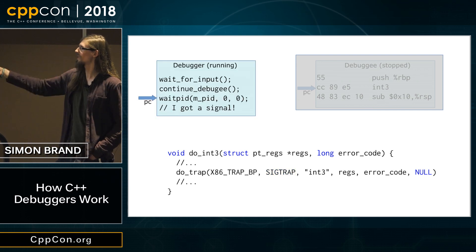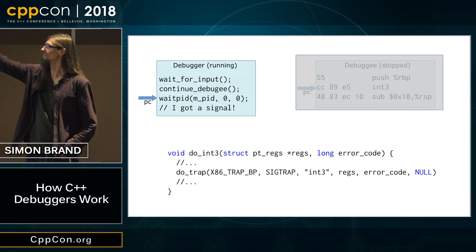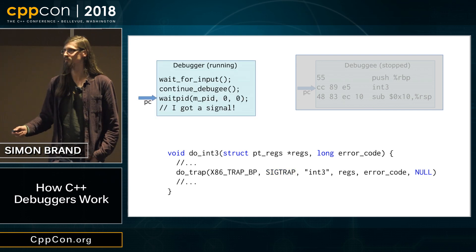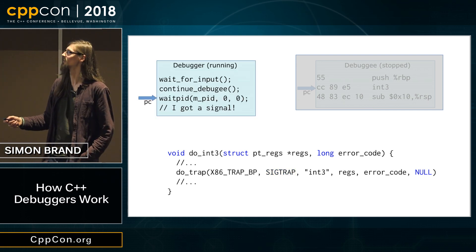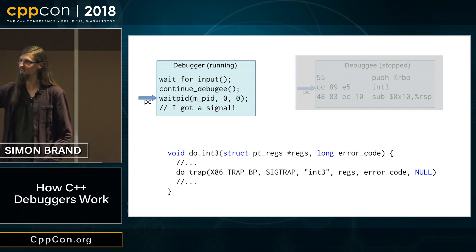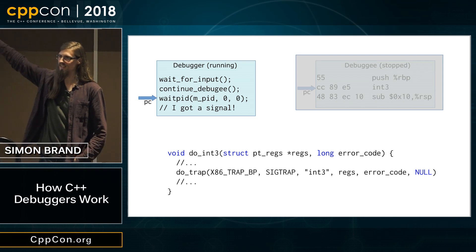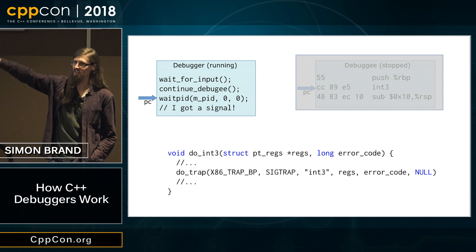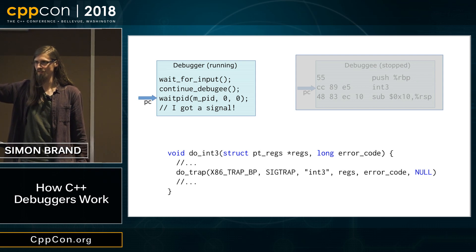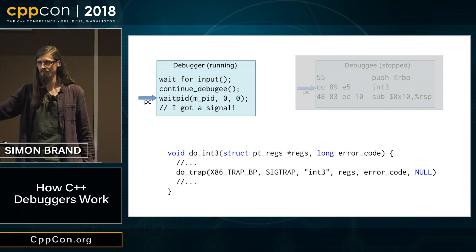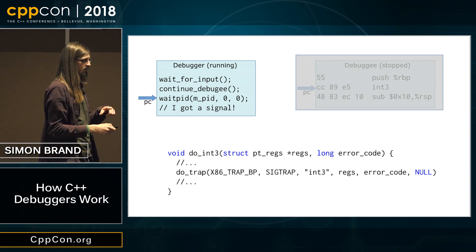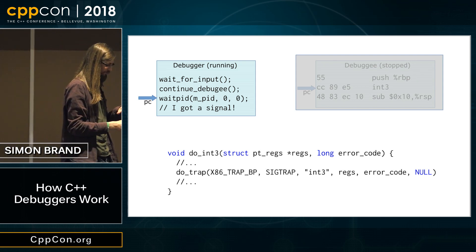To clarify: the `do_int3` sends a signal to the debuggee, and waitpid is waiting for a signal on that process. That's the connection between the two. Okay, that's the last question for now — I'll take more later.